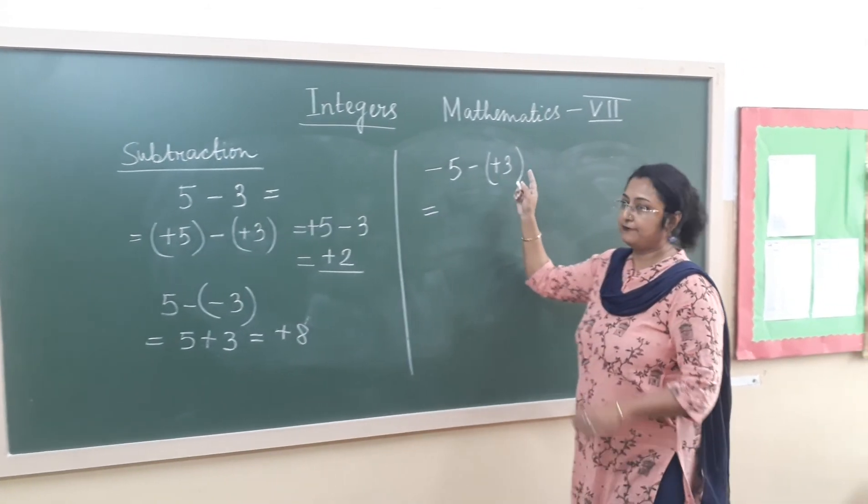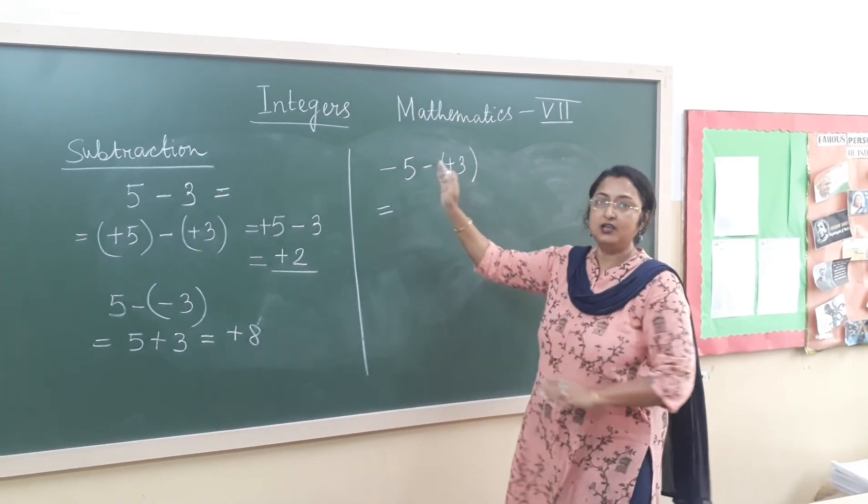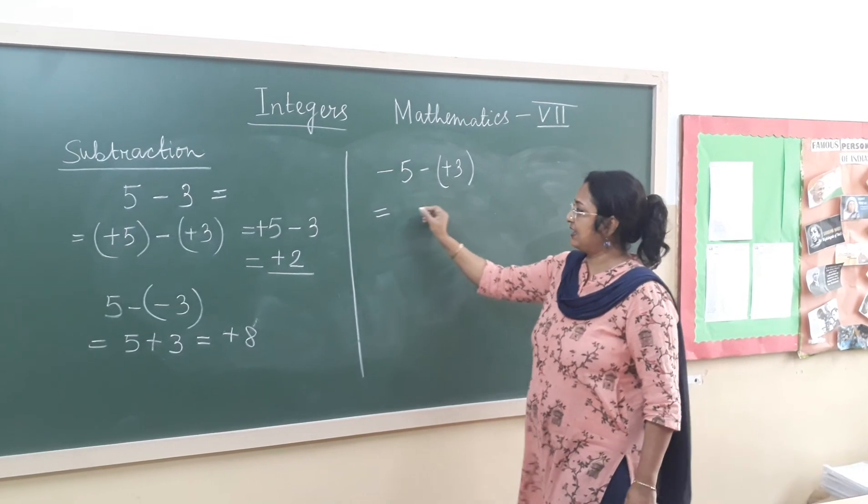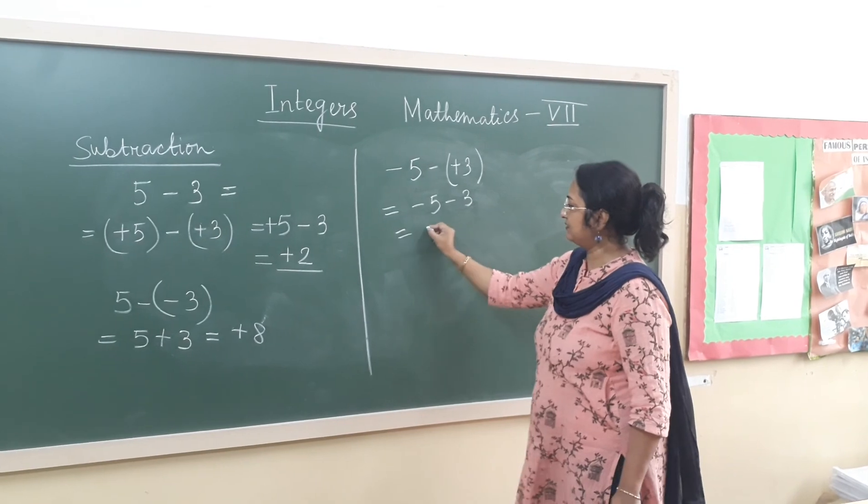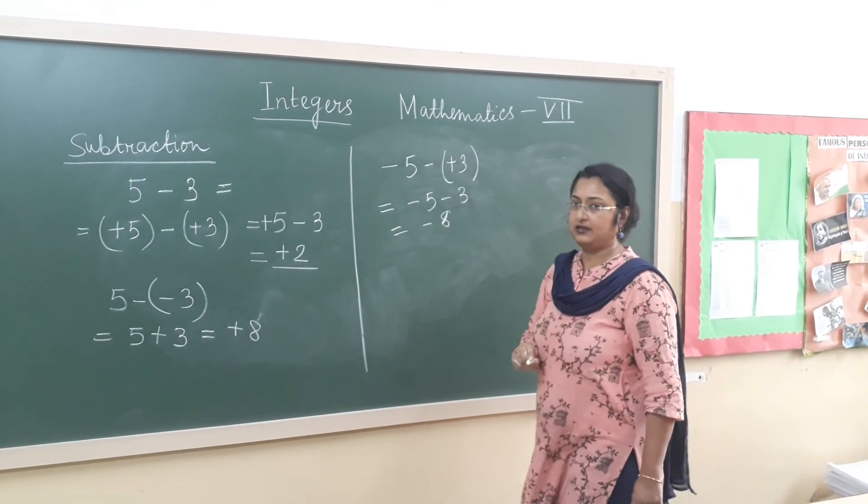Here we have to subtract plus 3 from minus 5. Again the same thing will happen. We have to change the sign. Minus 5 minus 3. So the answer will be minus.